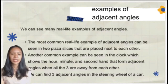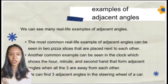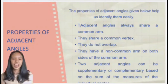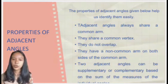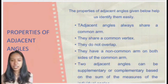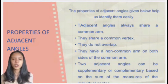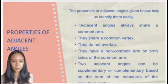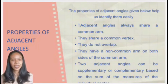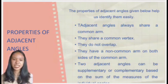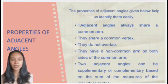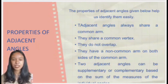Lastly, we can find three adjacent angles in the steering wheel of a car. The properties of adjacent angles are given below to help us identify them easily. Adjacent angles always share a common arm and a common vertex. They do not overlap. They have a non-common arm on both sides of the common arm. And lastly, two adjacent angles can be supplementary or complementary based on the sum of the measures of the individual angles.